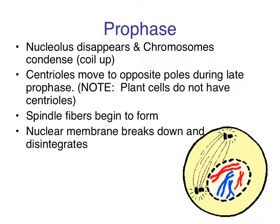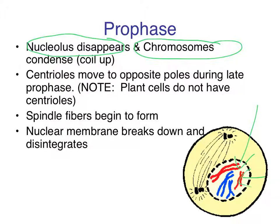Since we're talking about eukaryotic cells here, we're talking about the nucleus. Prophase is about getting the nucleus ready for division. The nucleolus will have to disappear. The chromosomes will condense together and coil up — you'll see now they have the traditional look of what you think of with a chromosome, with the pairs of sister chromatids, one on each side. Centrioles will develop and move to opposite poles. Spindle fibers will begin to form, which will be so necessary later for cellular division.